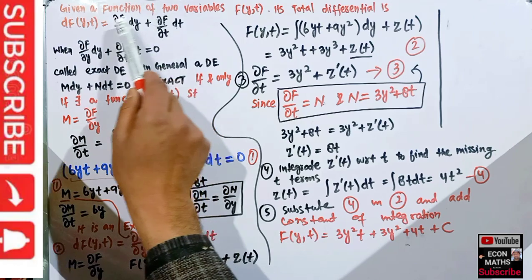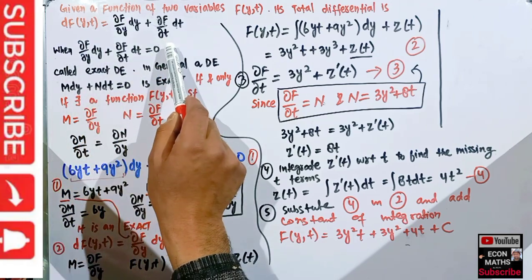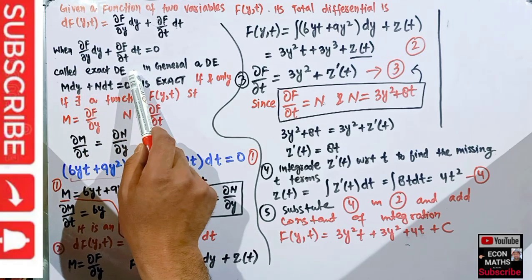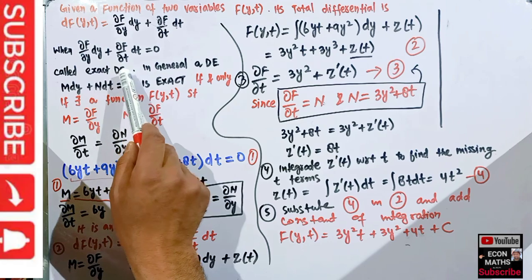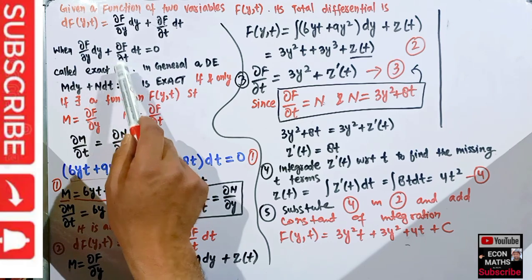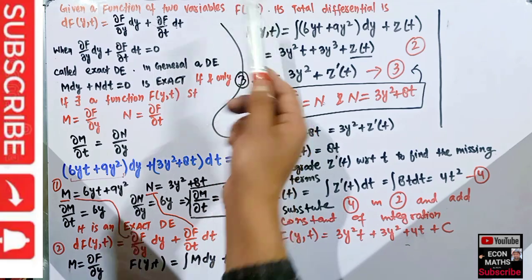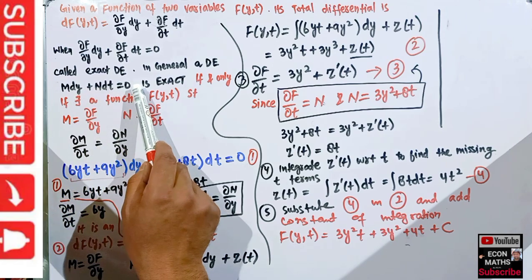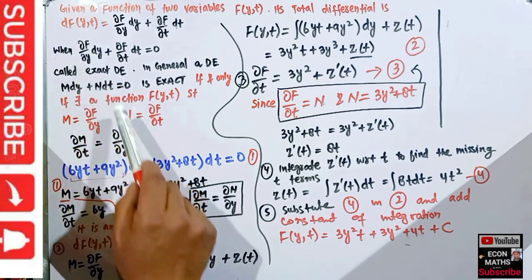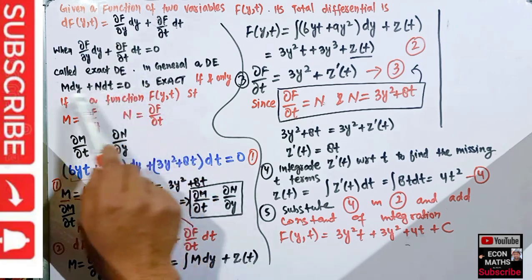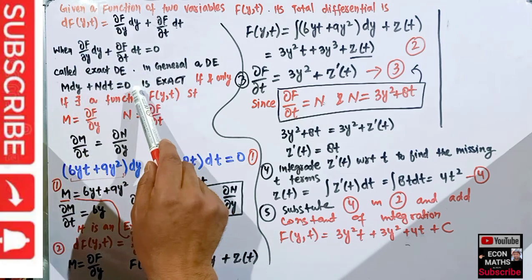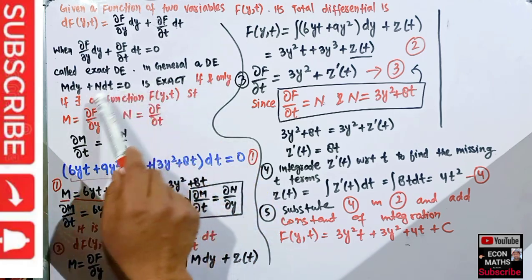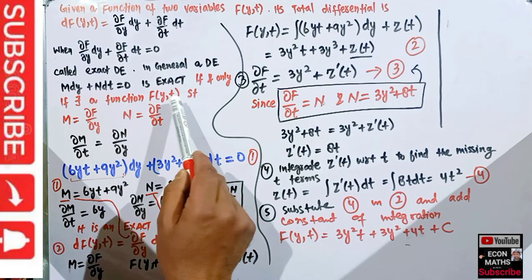When this total differential is set equal to zero, we call this an exact differential equation, because the left side is exactly the differential of the function f(y,t). In general, a differential equation M dy + N dt = 0 is an exact differential equation if and only if there exists a function f(y,t).